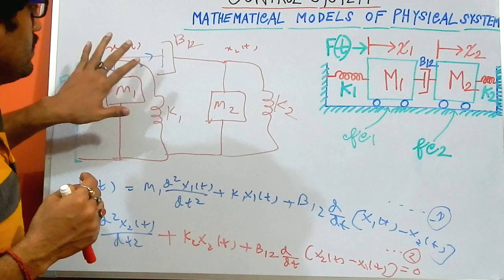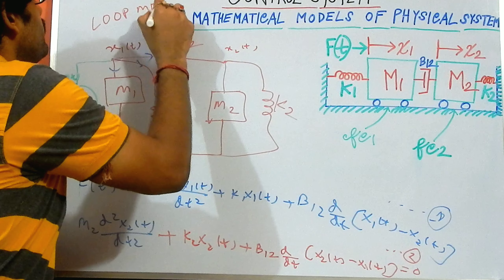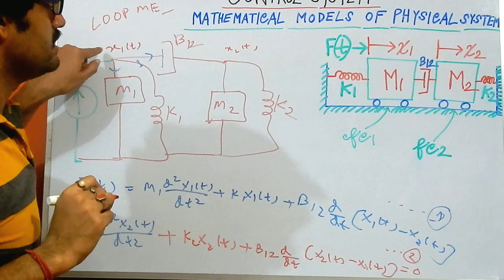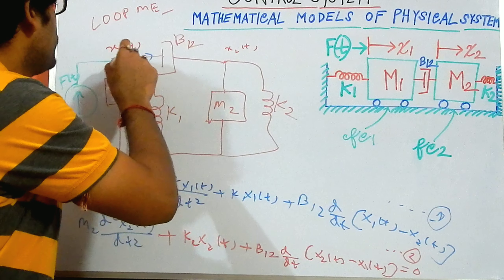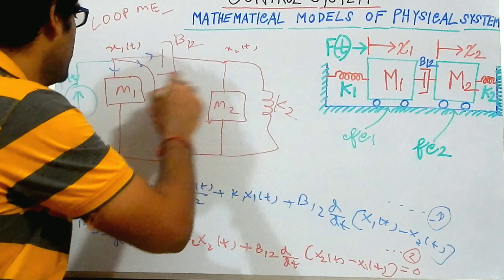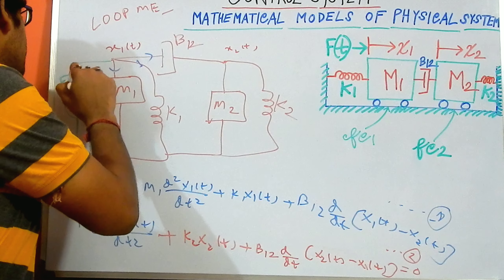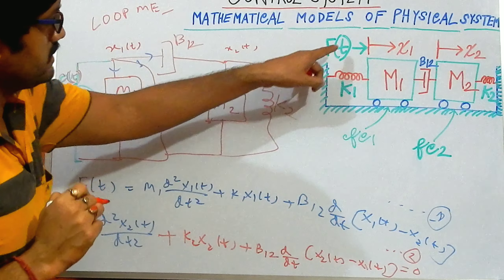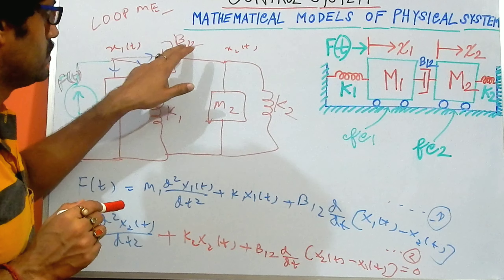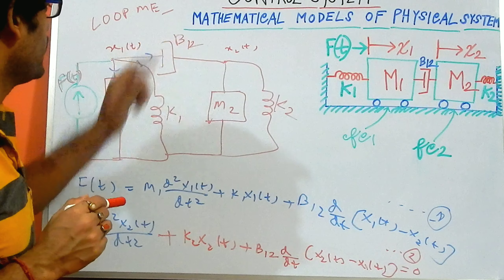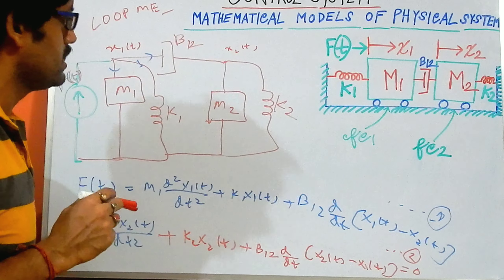I will explain once again the exact method. From this diagram, formed by the loop method, I first identify x1t and x2t. What are the connecting parts with x1t? x1t is connecting with our m1 block and k1. And the source connected here is nothing but ft. So ft is connected here, and x1 is connected with m1 and k1. And in between x1 and x2, I have got the b12, drawn between x1 and x2t.